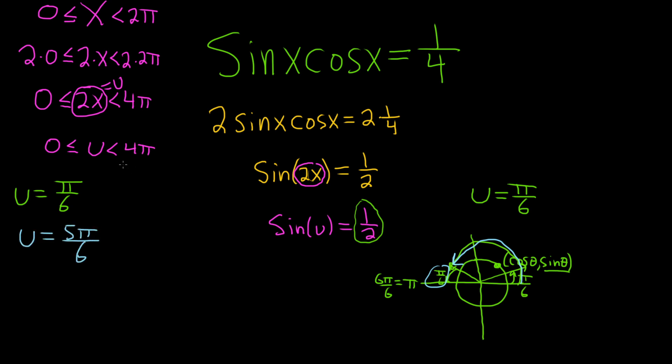But we're allowed to go all the way to 4π. So what we can do is we can just add 2π to each of these to get two more angles. So you take π over 6 plus 2π. That's going to give us another angle. Let's simplify this. This is π over 6 plus... Now think of 2π as a number over 6. So 12π over 6. So this is 13π over 6.